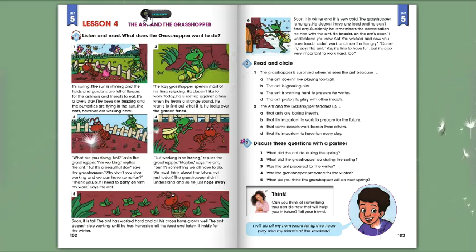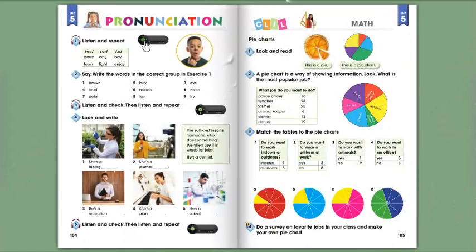The ant doesn't stop working until he has harvested all the food and taken it inside for the winter. Soon it is winter, and it's very cold. The grasshopper is hungry. He doesn't have any food, and he can't find any. Suddenly he remembers the conversation he had with the ant. He knocks on the ant's door. I understand you now, ant. You worked, and now you have food. I didn't work, and now I'm hungry. Come in, says the ant. Yes, it's fine to have fun, but it's also very important to work hard.